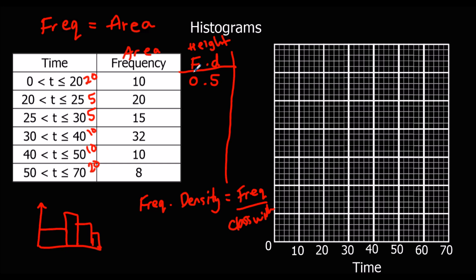So the height is going to be 0.5 - a height of 0.5, a width of 20 creates an area of 10, a frequency of 10. Continuing: frequency divided by width - 20 divided by 5 is 4, 15 divided by 5 is 3, 32 divided by 10 is 3.2, 10 divided by 10 is 1, and 8 divided by 20 is 0.4.